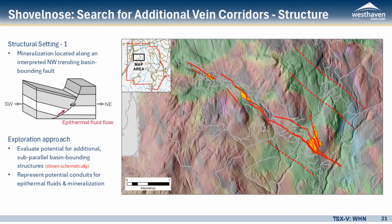The first stage we're doing is looking at where we can identify sub-parallel northwest trending basin-bounding faults — like the main trend along which the three deposits have been found. With the drilling completed so far, there are areas where we have constrained where additional sub-parallel basin-bounding faults will be located. The current drilling is doing the same thing, and that gives us a first-stage vector to look at.